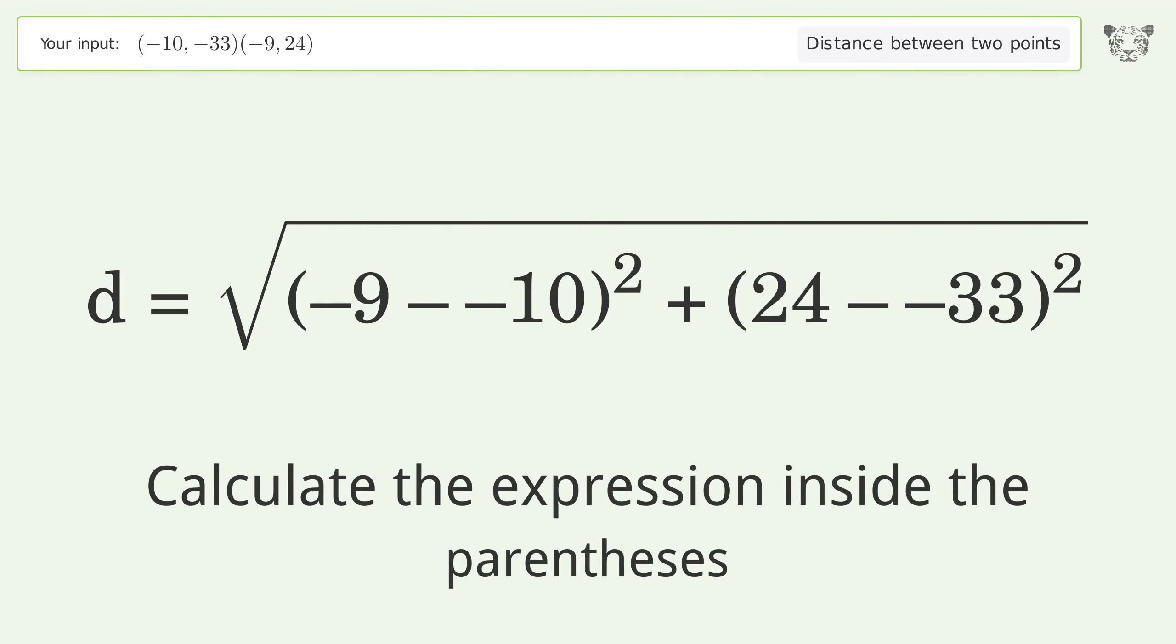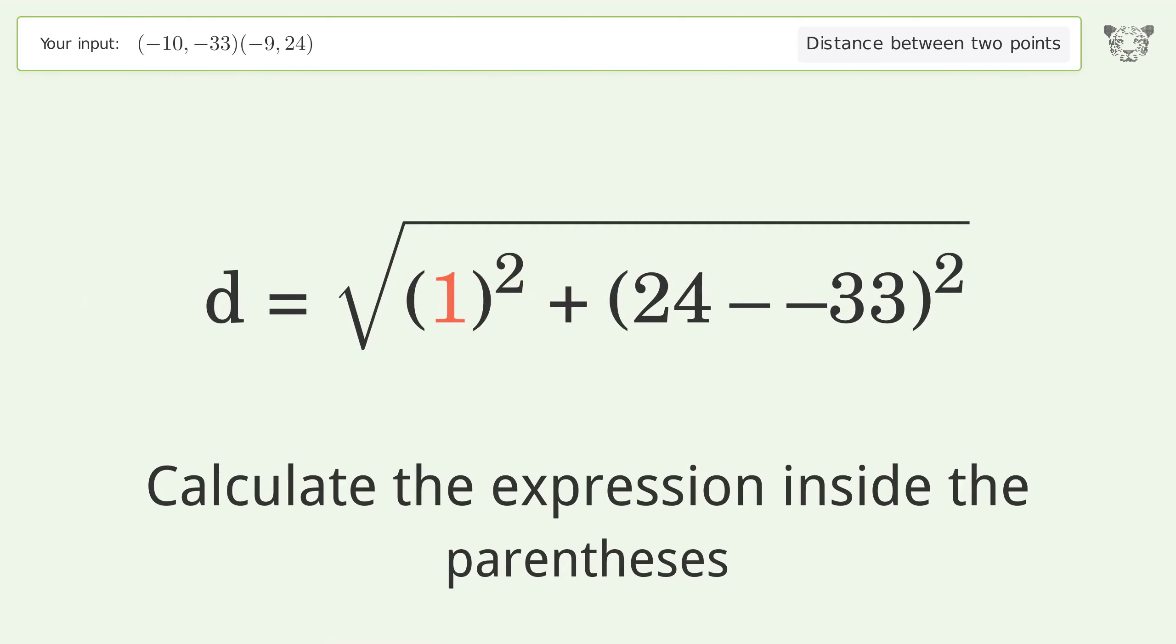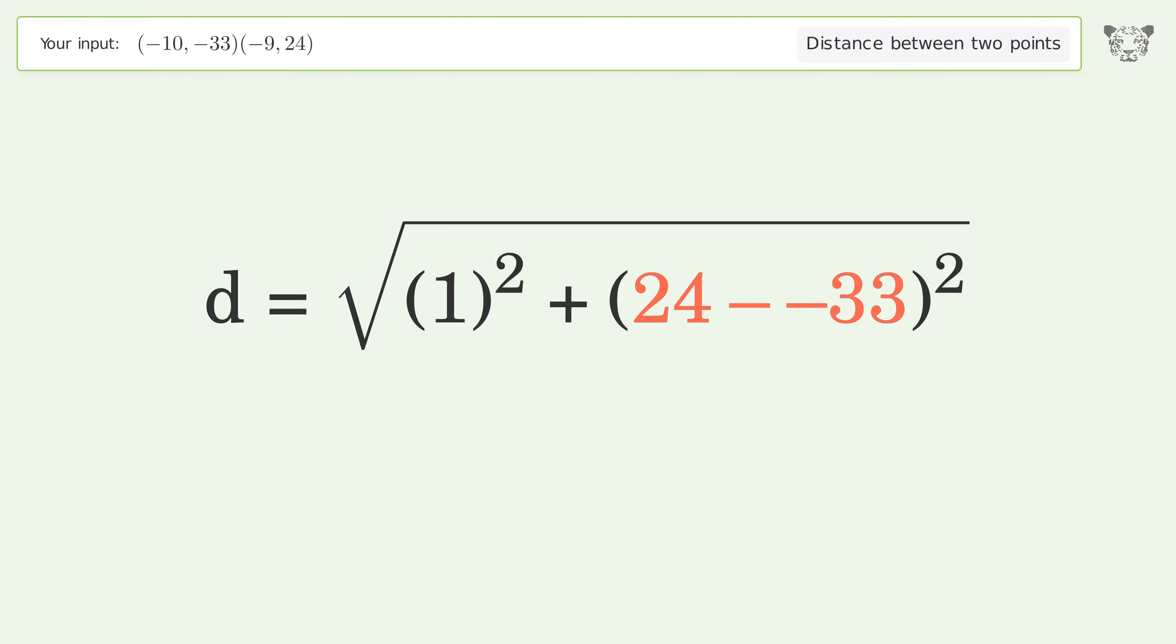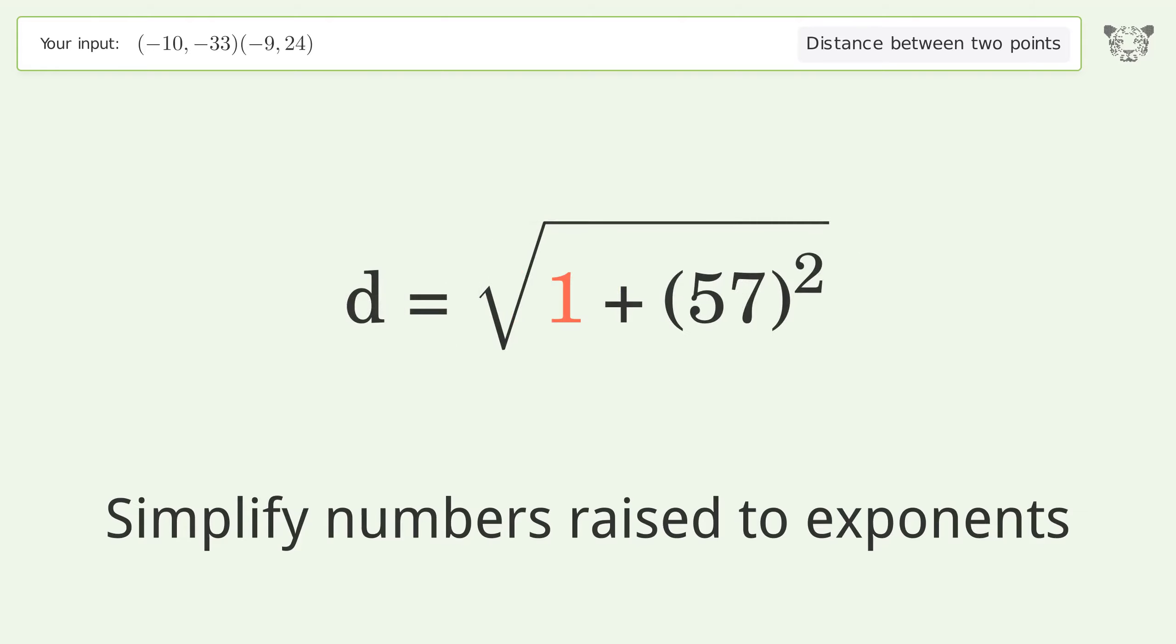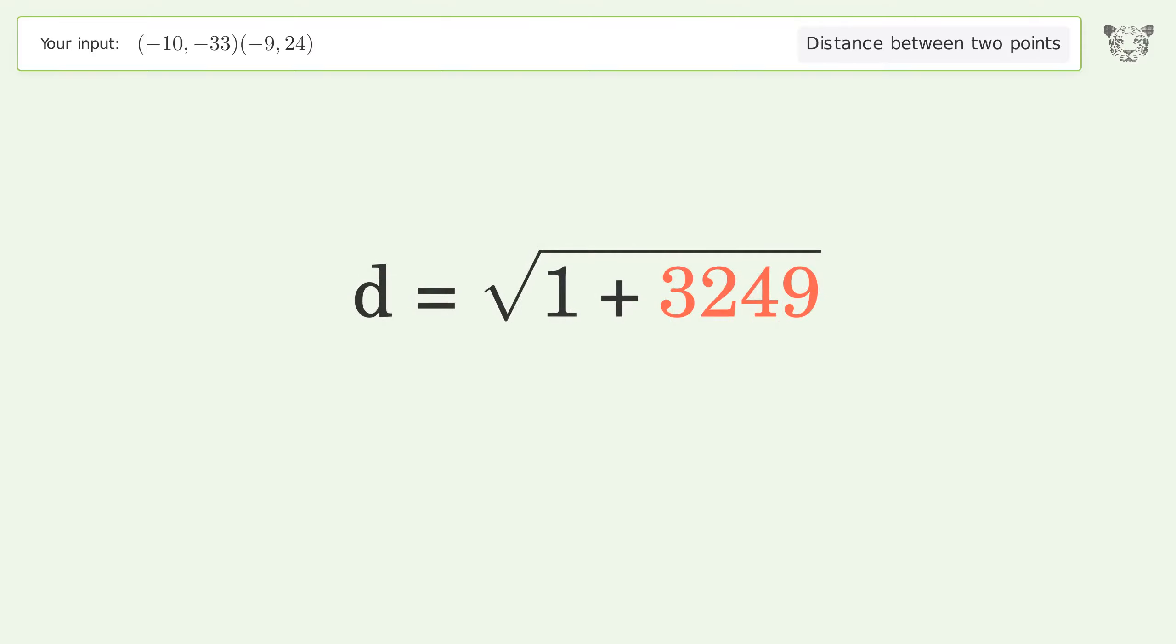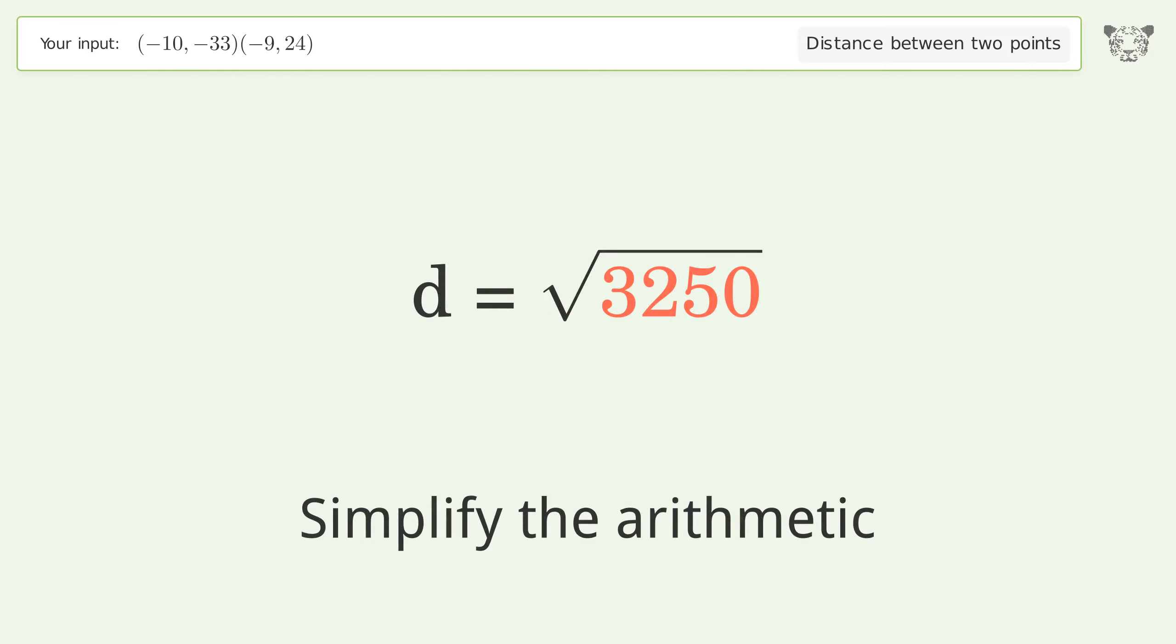Calculate the expression inside the parentheses. Simplify numbers raised to exponents. Simplify the arithmetic. And so the distance between the two points is the square root of 3250 or 57.009.